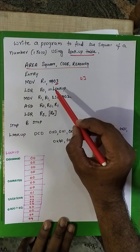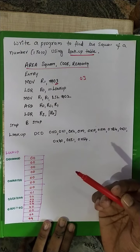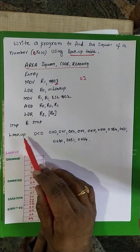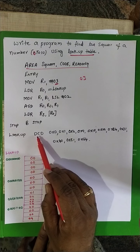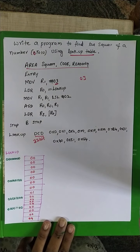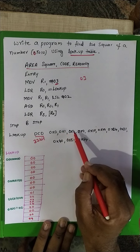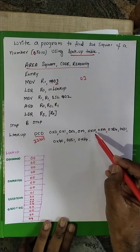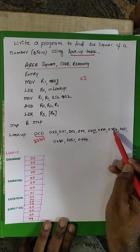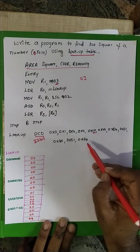Next, the lookup table — in memory locations we have stored the square values from 0 to 10. The lookup table is declared here with data type DCD, which indicates 32-bit data. So the values are: 0, 1, 4 — where 0 is the square of 0, 1 is the square of 1, 4 is the square of 2, 9 is the square of 3, 16 (0x10) is the square of 4, 25 (0x19) is the square of 5, and so on up to the square of 10.